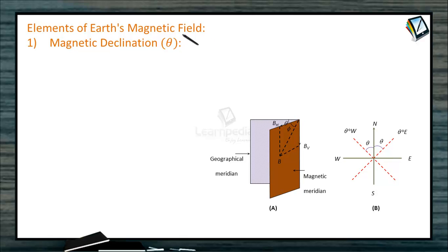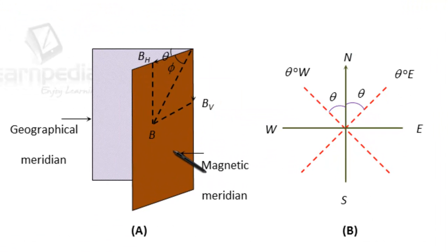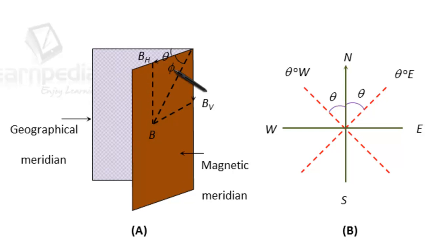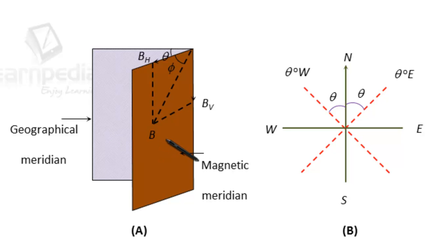Elements of Earth's magnetic field. The magnitude and direction of the magnetic field of Earth at a place are completely given by certain quantities known as magnetic elements. Here we have shown a geographical meridian and this is the magnetic meridian. The angle between them is theta, called magnetic declination — the angle between geographical meridian and the magnetic meridian planes.